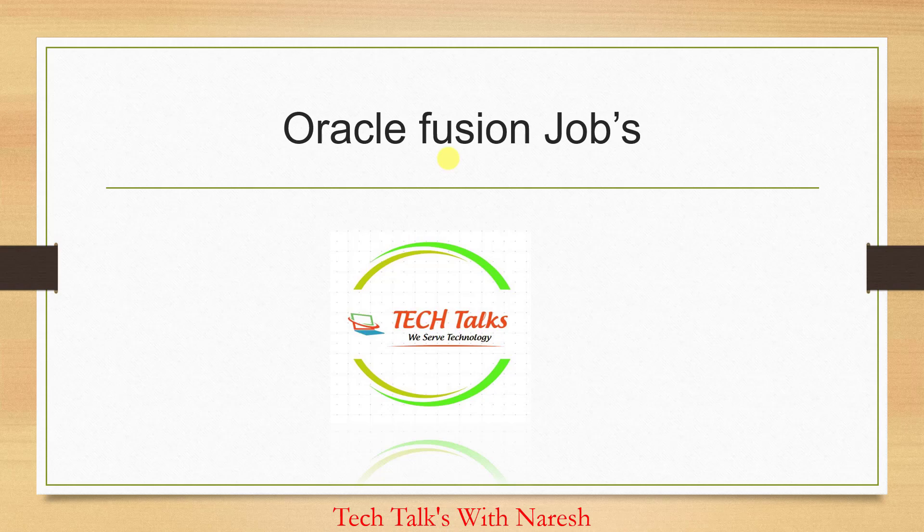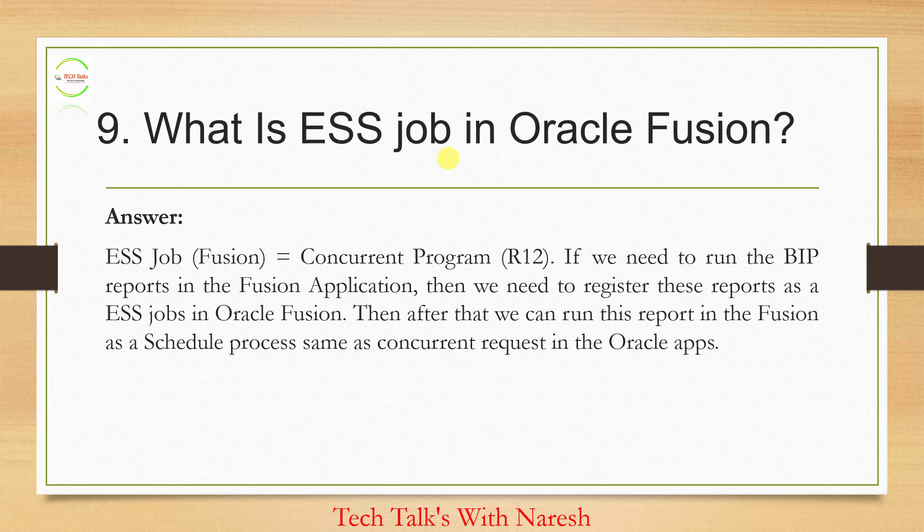The next question is: what is an ESS job in Oracle Fusion? As mentioned, a concurrent program in R12 is called an ESS job in Oracle Fusion. If you have to run any type of report, or schedule any BIP report in Oracle Fusion, you create an ESS job, and that ESS job will schedule or run that respective BIP report. I have multiple videos on my channel on how to create, schedule, and run ESS jobs.